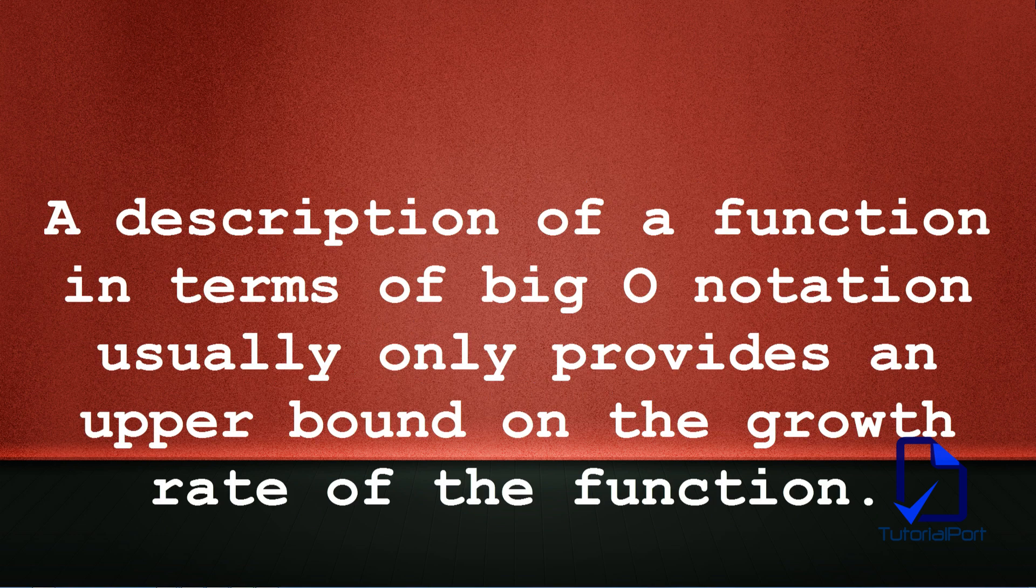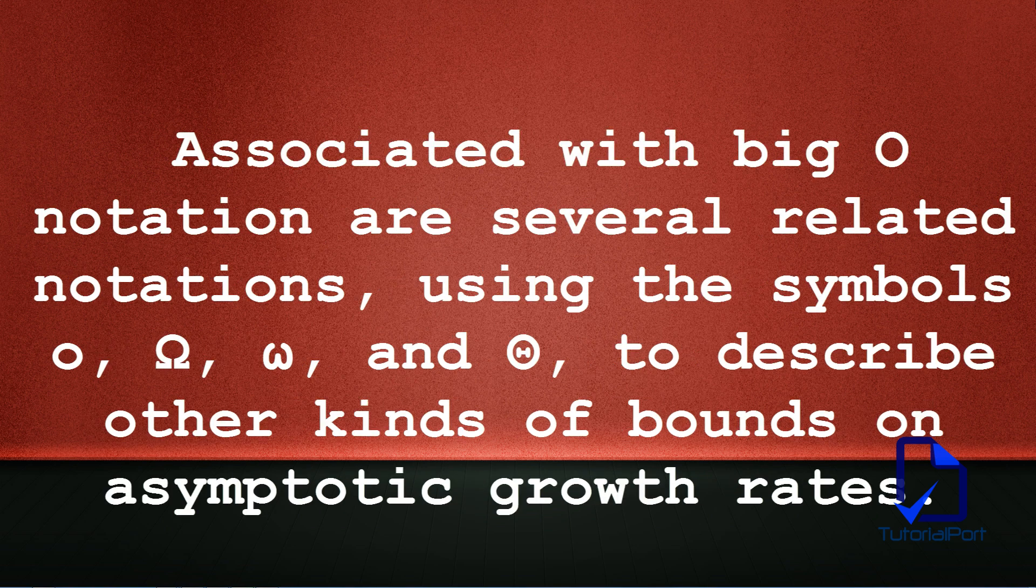A description of a function in terms of Big O notation usually only provides an upper bound on the growth rate of the function. Associated with Big O notation are several related notations.